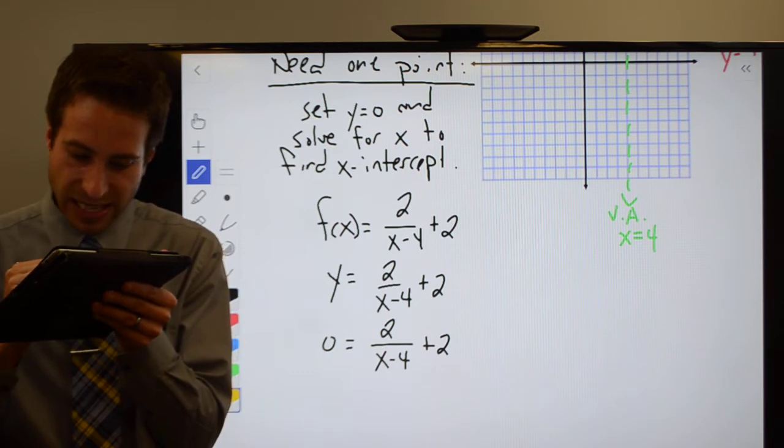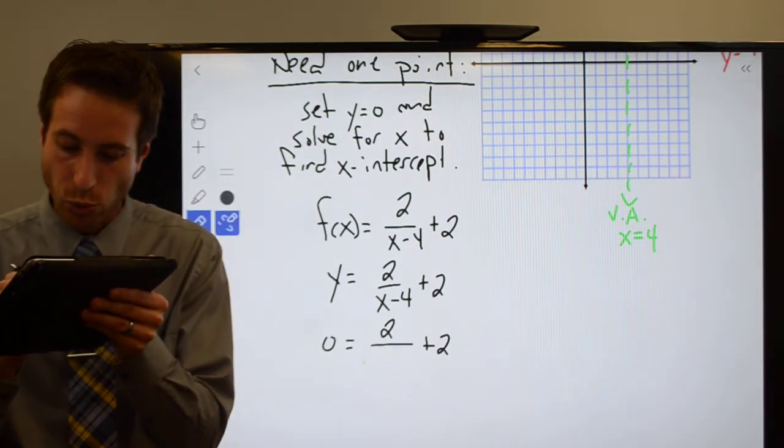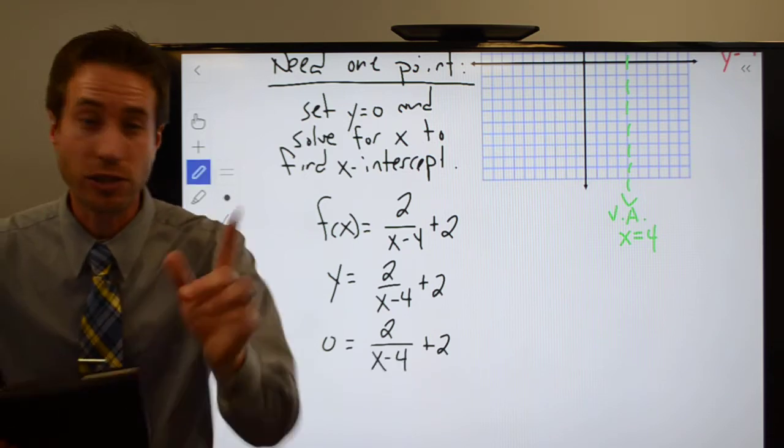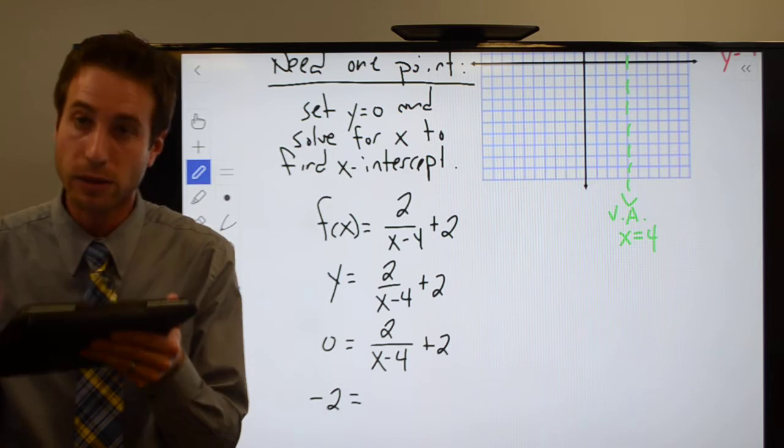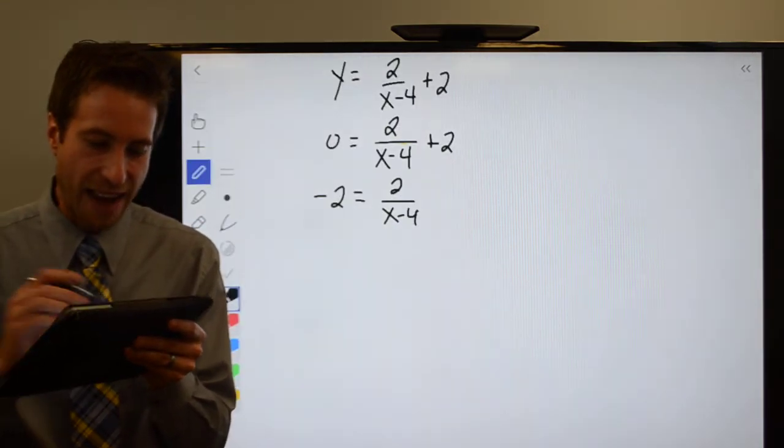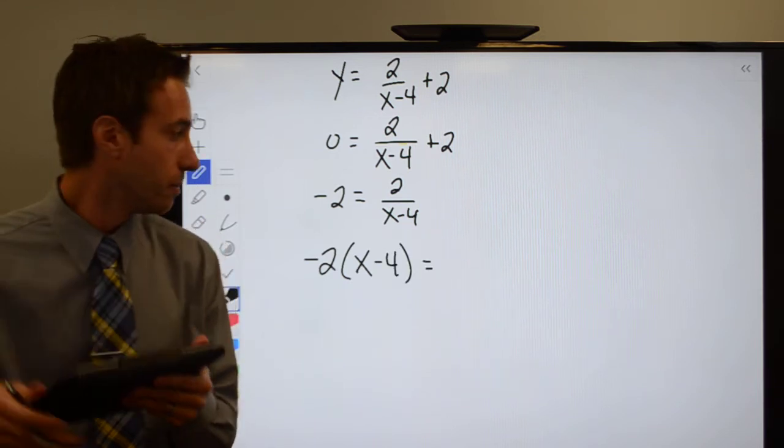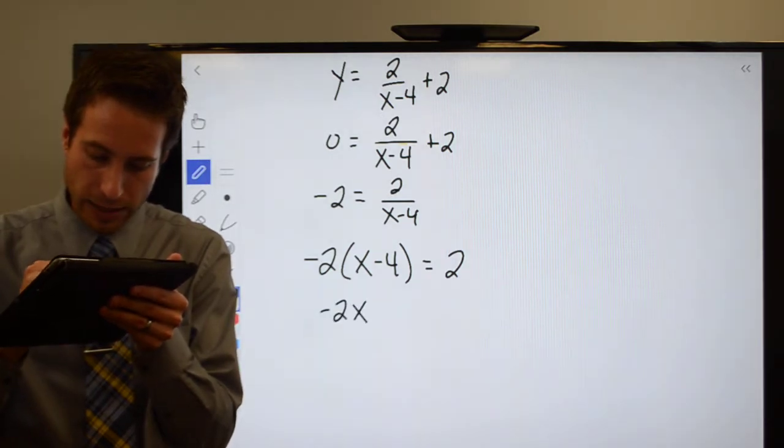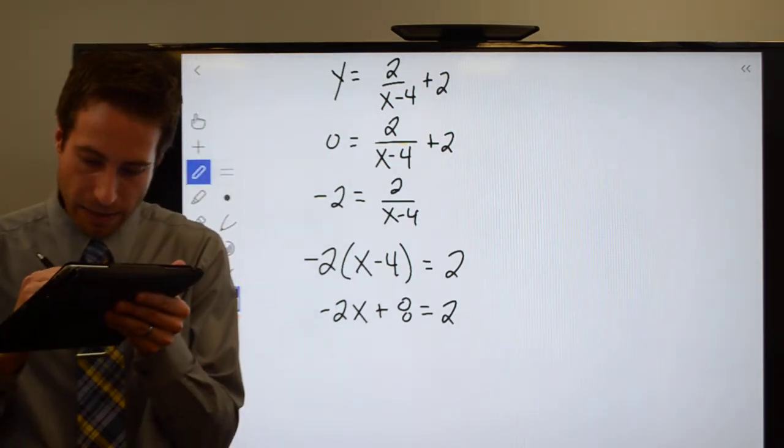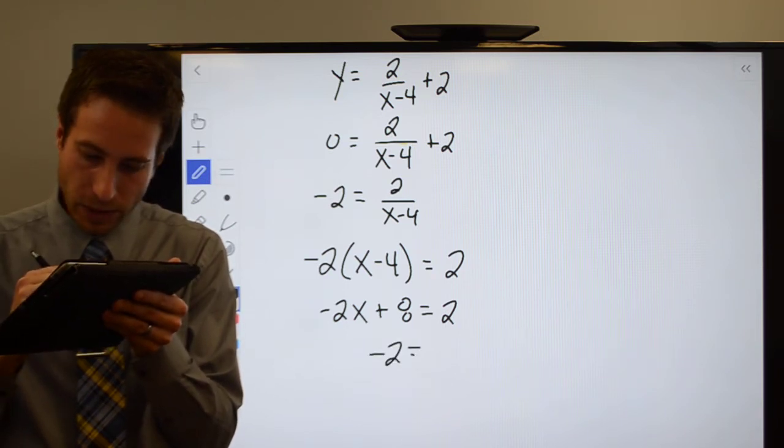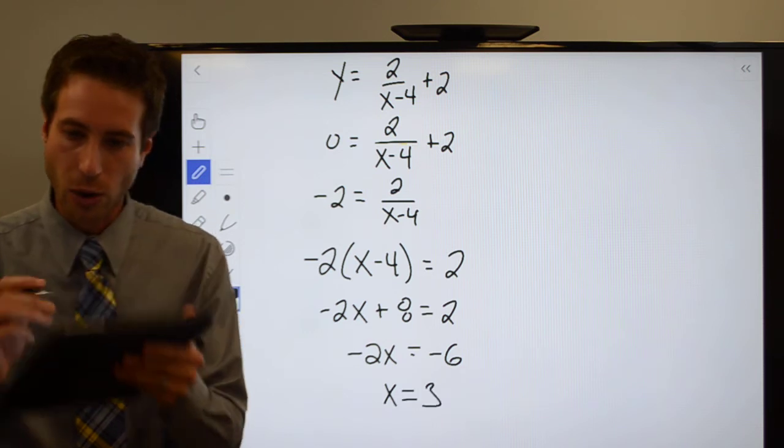It's the reverse order of operations. First, move the plus 2 to the other side. So I have minus 2 equals 2 over X minus 4. Now I have division by X minus 4, so I need to multiply it to the other side. So negative 2 times X minus 4 equals 2. Distribute the negative 2: minus 2X plus 8 equals 2. Subtract the 8 to the other side: minus 2X equals negative 6. Divide both sides by negative 2, and I get X equals 3.